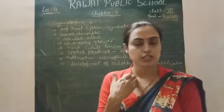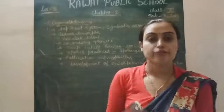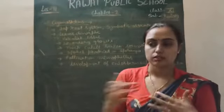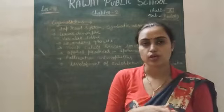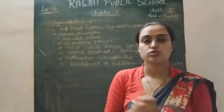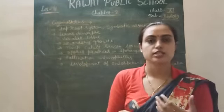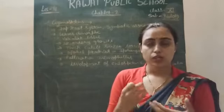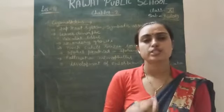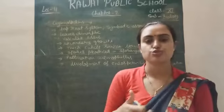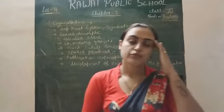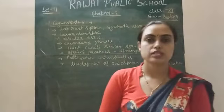Pollination in gymnosperms generally occurs with the help of wind — anemophily is present. Wind helps in the transmission of male gametes to the female track because male gametes are non-motile. In gymnosperms, there is no neck canal cell and no ventral canal cell present in the female. Siphonogamy kind of fertilization takes place, meaning a pollen tube arises and the male gamete enters the female track — same as in angiosperms. However, triple fusion and double fertilization do not take place in gymnosperms.